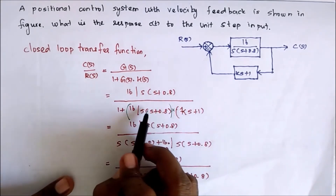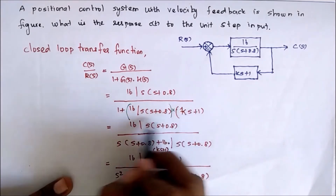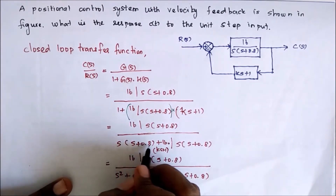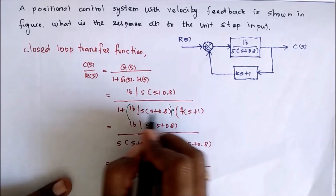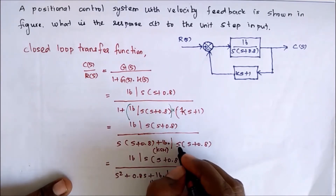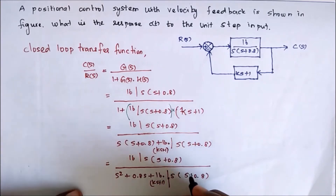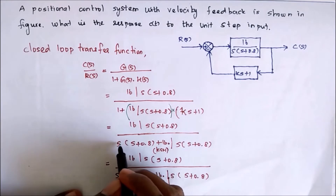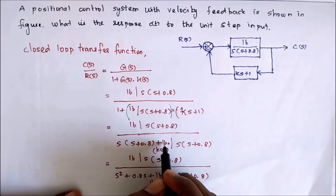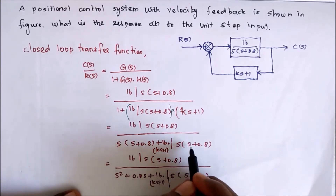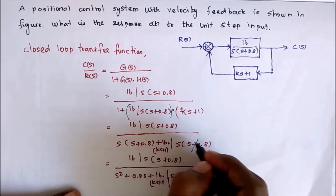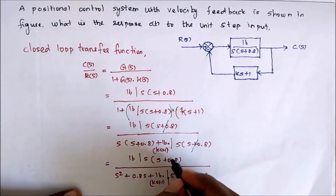We have to take LCM. This term is common to this term, so we have to multiply this with 1. So S into S plus 0.8, plus 16 into Ks plus 1. Then 16 into Ks plus 1 divided by S into S plus 0.8. Now we multiply S inside: S squared plus 0.8S. The remaining things are 16 into Ks plus 1 divided by S into S plus 0.8. Here S into S plus 0.8 appears in both numerator and denominator, so we can cancel.